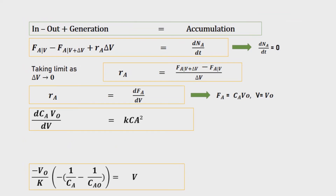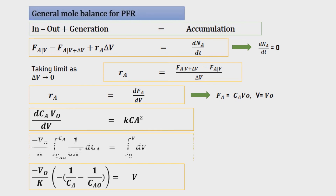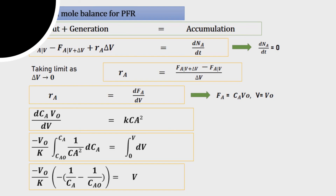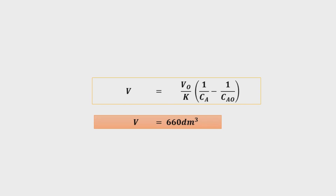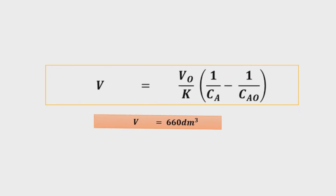For PFR, after integration we get V equals V0 over K times (1 over CA minus 1 over CA0). Substituting the values, the volume for this PFR is 660 decimeter cubed.